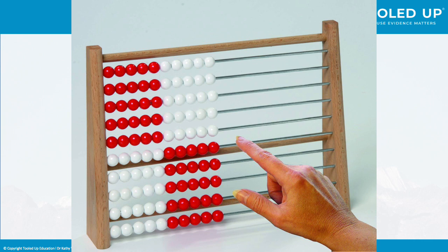For some, the split of 5 and 5 on this style of abacus makes numbers easier to see because for most of us we can see 5 without counting.